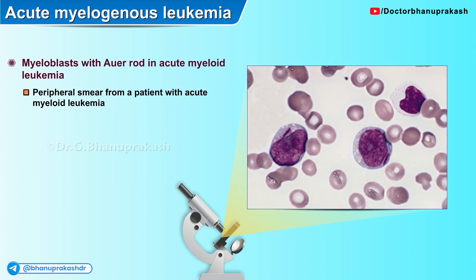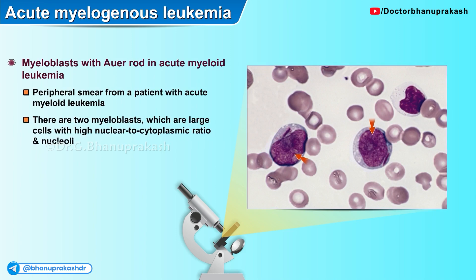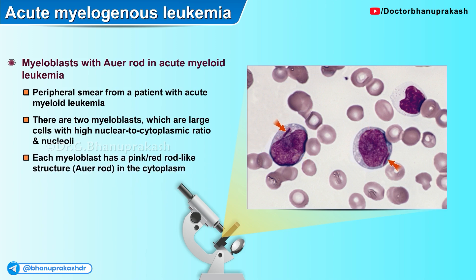Here is a peripheral smear from a patient with acute myeloid leukemia. There are two myeloblasts which are large cells with a high nuclear-to-cytoplasmic ratio. The presence of nucleoli is evident, and each myeloblast has a pink rod-like structure — the Auer rod — in their cytoplasm, seen in both cells pointed to in the center of the field.